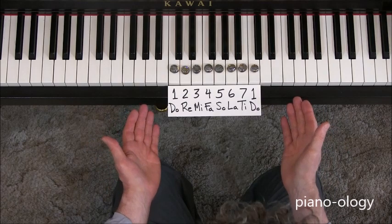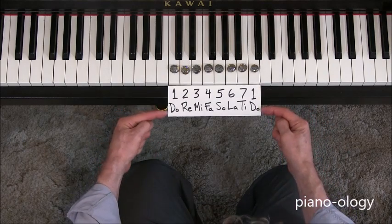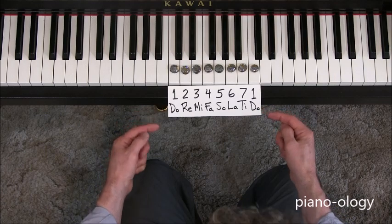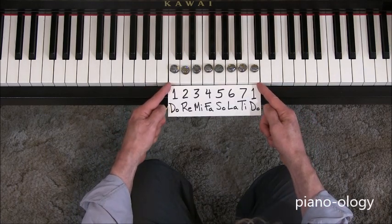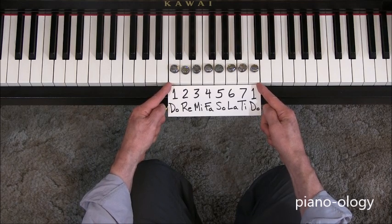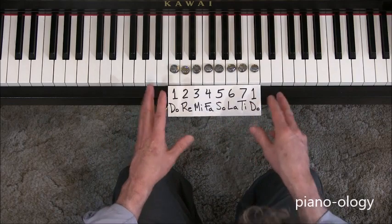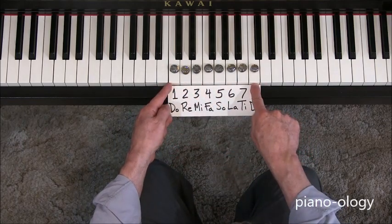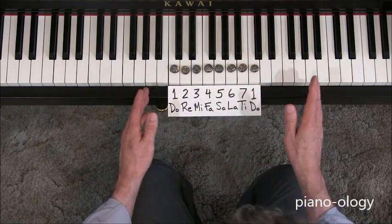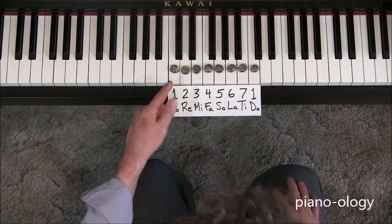The first thing you have to know is that whether we're talking about the number system or the solfege system, both of these systems use the major scale as the common point of reference. To illustrate what's going on here, I've chosen to lay out the C major scale. Could have been any other major scale, but here we have, just to keep it simple, C major, all white notes.